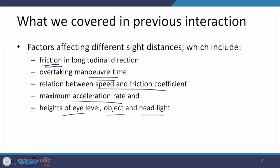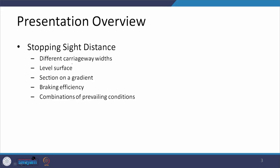With these factors in mind, some will affect a particular type of sight distance and others will affect another type. Today we are going to talk about the stopping sight distance under different conditions — carriage width, leveled surface versus gradient surface, and the efficiency with which the brakes are being applied — and how the combination of all these conditions makes a difference for stopping a vehicle.